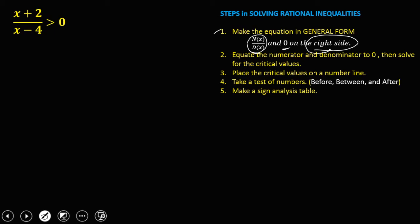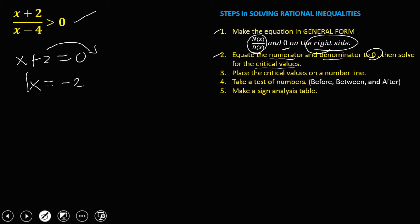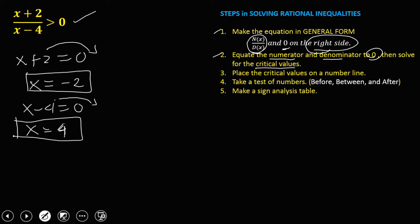Since this is given in general form, just equate the numerator and denominator to zero to solve for the critical values. So we have x plus 2 equals 0, and solving for x gives us negative 2. And also, x minus 4 equals 0, so x is positive 4. These are the critical values.